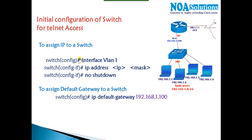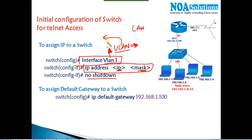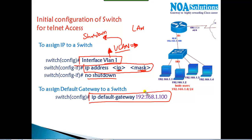To assign an IP address, we go to 'interface vlan 1'. VLAN 1 is a virtual LAN interface — it's not a physical interface — and by default it is in shutdown state. We assign the IP address with the subnet mask, then issue 'no shutdown' to bring the interface up. We also assign an IP default gateway to tell the switch who its router is.